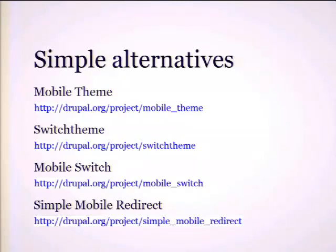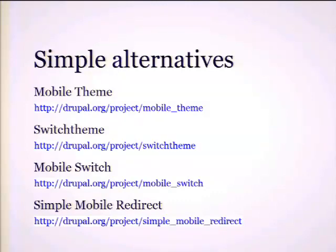What you need to do is detect the device and redirect it to a specific website with a specific caching configuration for that group of devices. You might have a site with a mobile context set up correctly — showing certain things on one device and different things on another with a redirect to your mobile website.